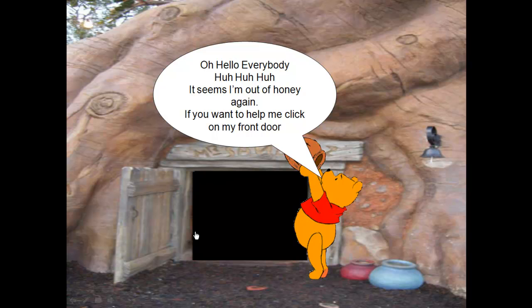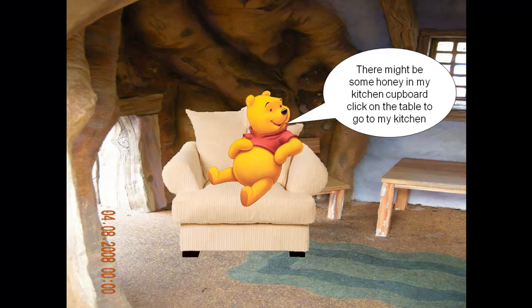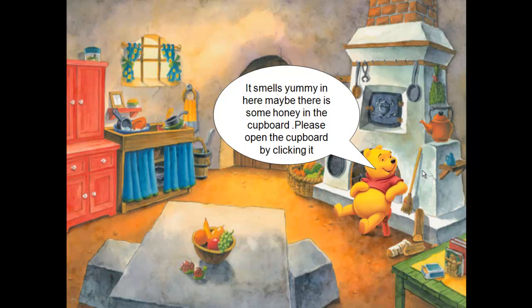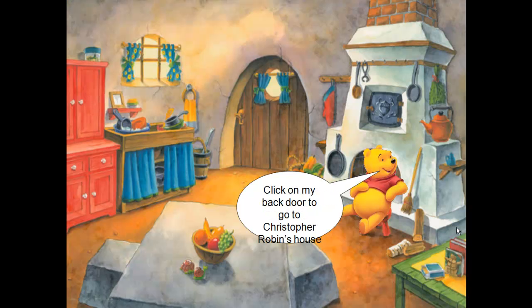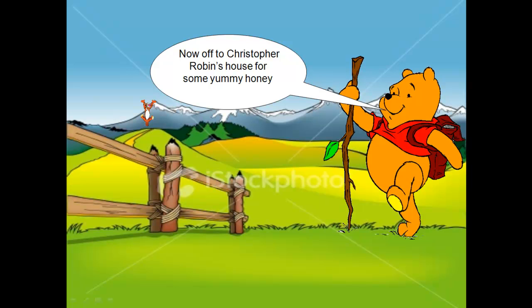'Oh hello everybody, it seems I'm out of honey again. If you want to help me, click on my front door.' There's a rectangle drawn on the front door — we click on it and go into Pooh's house. 'There might be some in the kitchen cupboard.' So we click on the table to go to the kitchen. 'It smells yummy in here, maybe there's some honey in the cupboard.' There are hyperlinks on the cupboard doors, so we click the door and go in — that's an empty honey pot. 'Maybe Christopher Robin has some honey.' Click on the back door — there's an invisible shape drawn on the door to make the hyperlink.